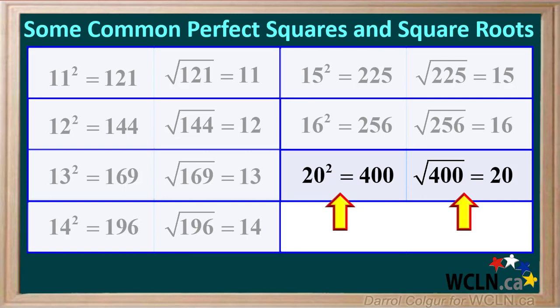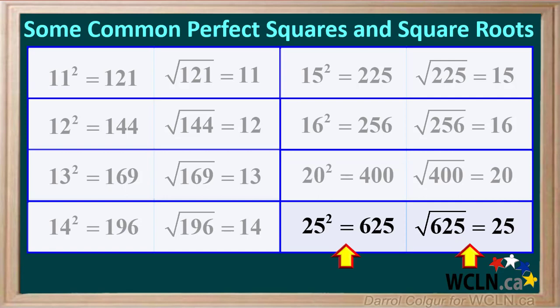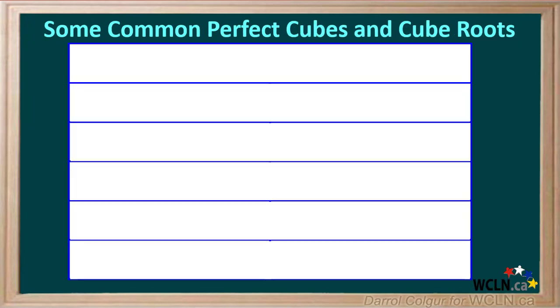20 squared is 400, and the square root of 400 is 20. 25 squared is 625, and the square root of 625 is 25. Of course, it is useful to know the squares of other numbers, but these are the most important for now. It's also handy to know a few perfect cubes and cube roots from memory.